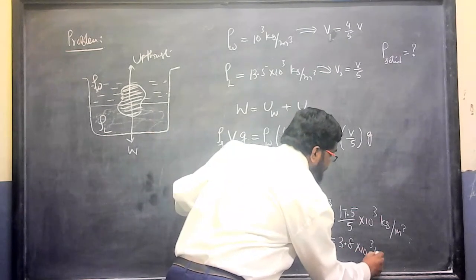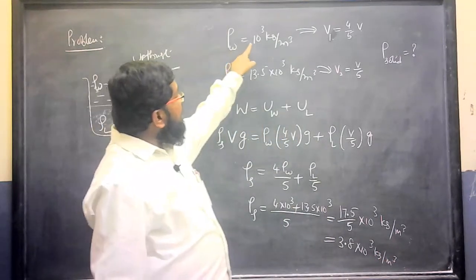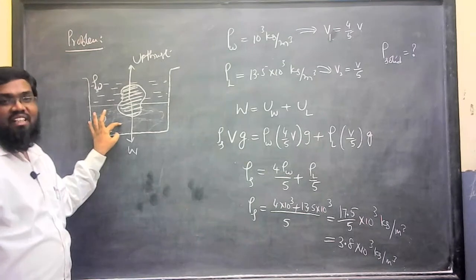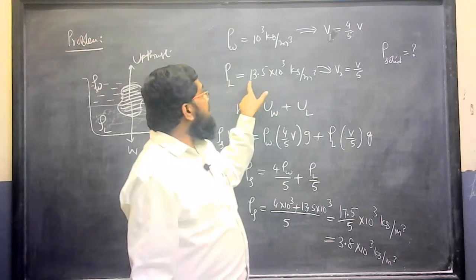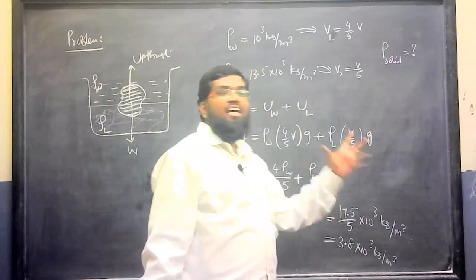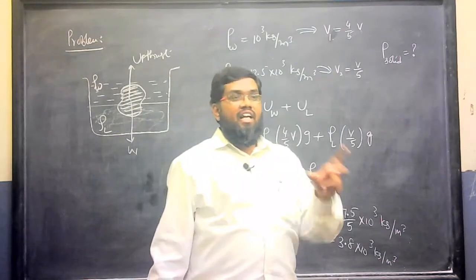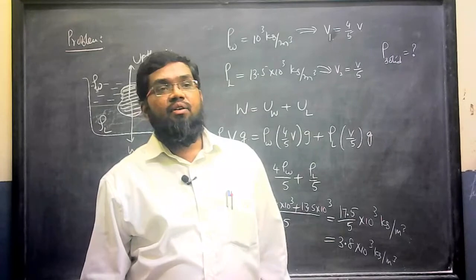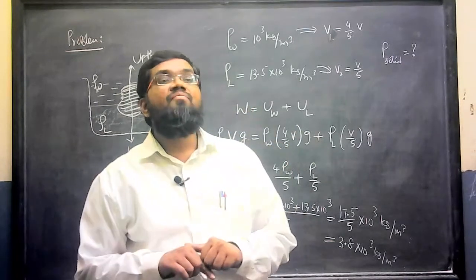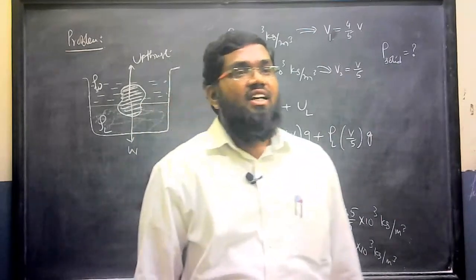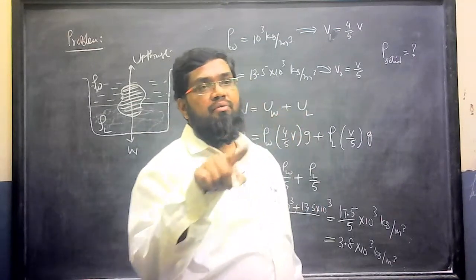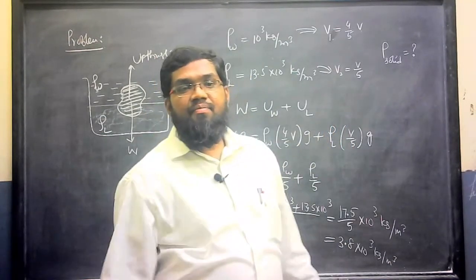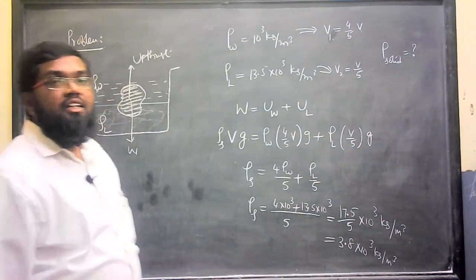The density of the object comes out to be 3.5 × 10³ kg/m³. Since object density is less than the mercury density of 13.5 × 10³, it will not sink more. The fraction immersed is proportional to the ratio of densities: density of solid divided by density of liquid equals volume immersed divided by total volume. Less density of liquid means more of the solid is immersed; if object density equals liquid density, it is fully immersed.